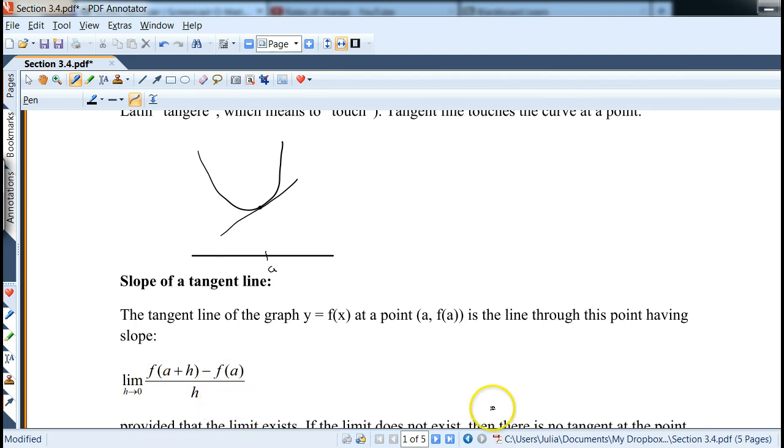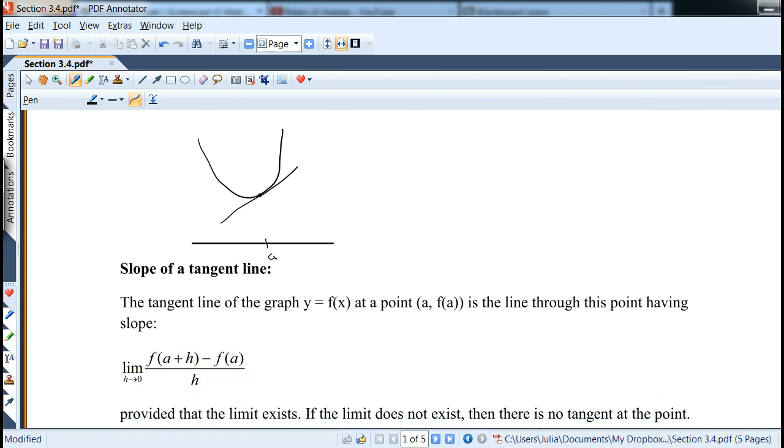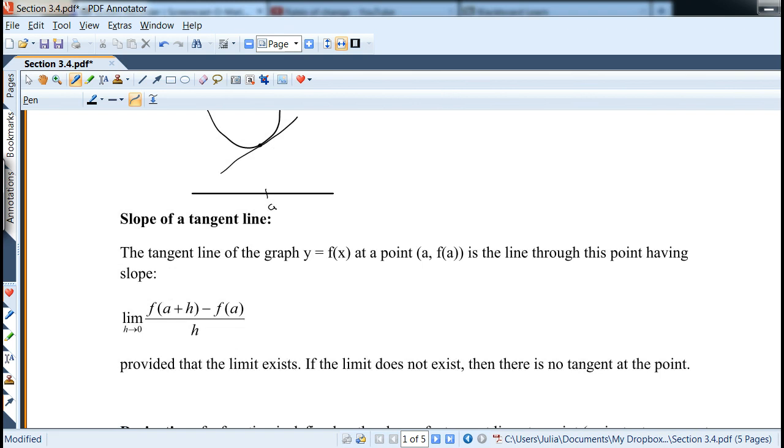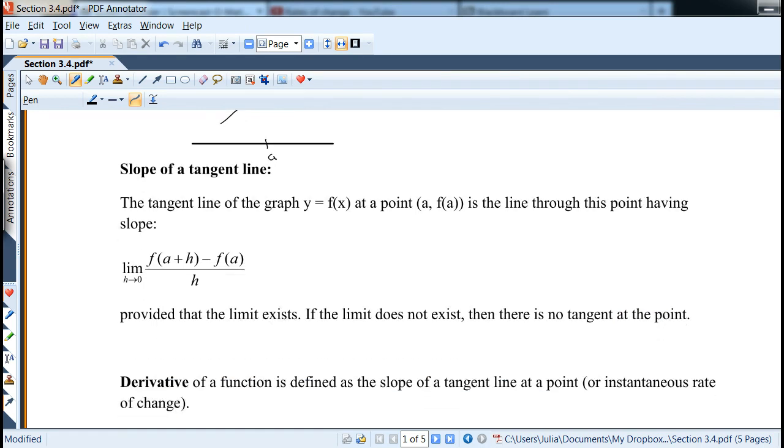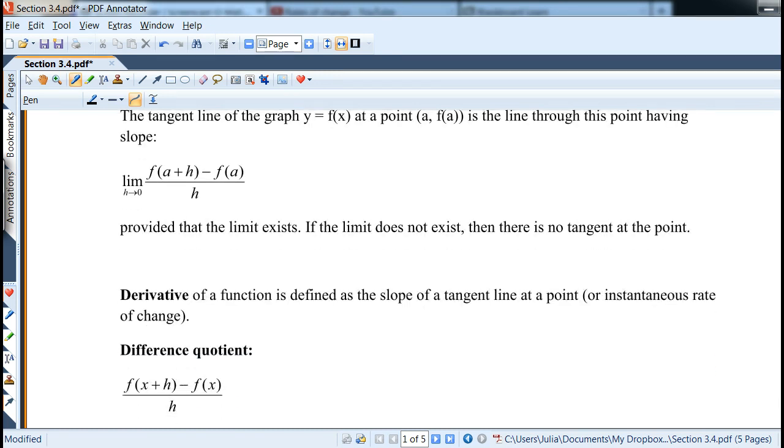Well, we've seen this already. And provided that this limit exists, if the limit does not exist, then there is no tangent at the point. So the derivative is not always defined. So the derivative is also instantaneous rate of change, or if it's at a point, it's a slope of a tangent line or a number.